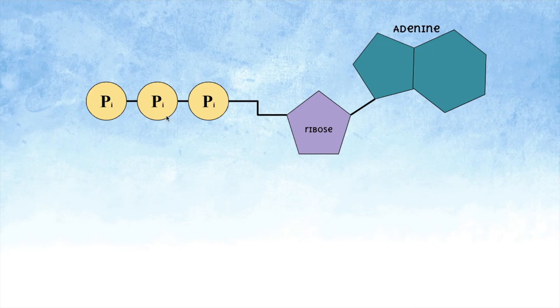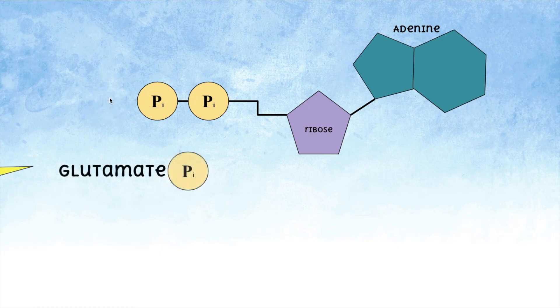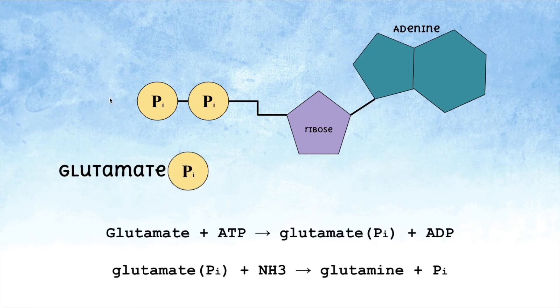In general, the bond between the second and the third phosphate of ATP is very unstable, which is why the breakdown of ATP into ADP and phosphate is spontaneous. When used in an energy coupling reaction, this phosphate bonds to glutamate, thus giving it the boost of energy needed to react with ammonia to form glutamine.